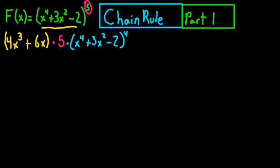Now to simplify this, we're going to multiply this 5 by the 4x cubed. So you're going to get 20x cubed plus 30x times x to the fourth plus 3x squared minus 2, all to the fourth power.